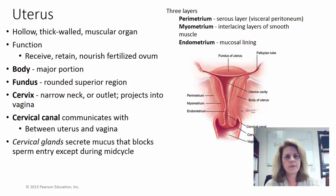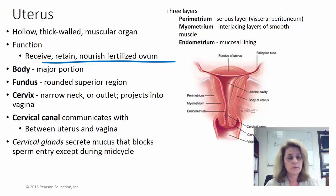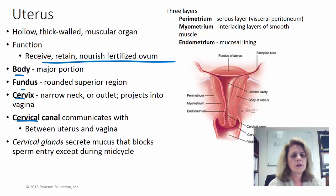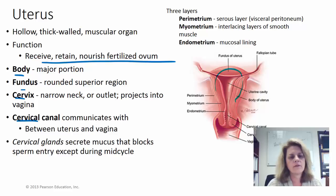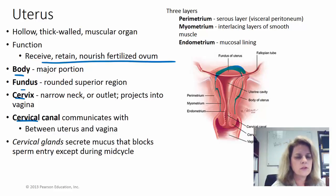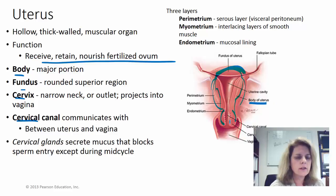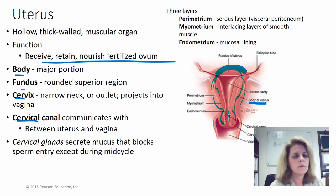The uterus is a thick muscular wall structure that receives, retains, and nourishes a fertilized ovum — it's where the baby grows. It has four main parts: the body, the fundus, the cervix, and the cervical canal. If you think of the uterus as an upside-down pear shape, the rounded area at the top is the fundus, the majority of the uterus is the body, then you have the cervix and the cervical canal.